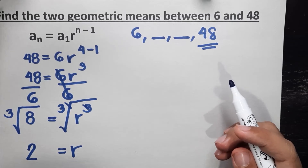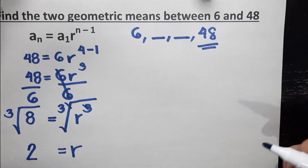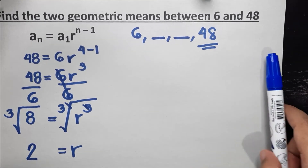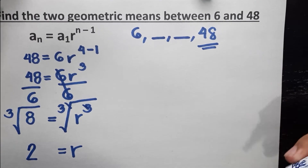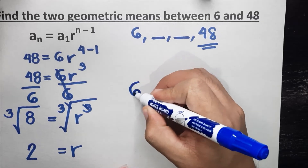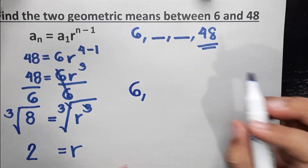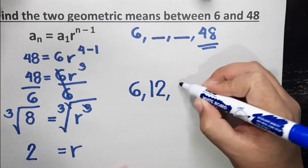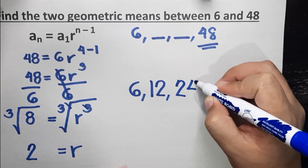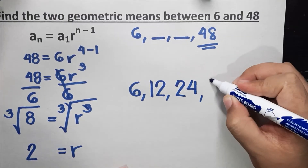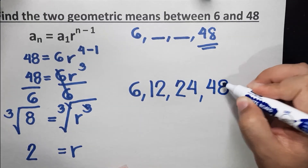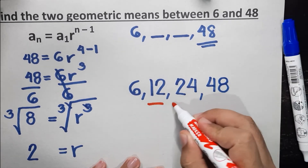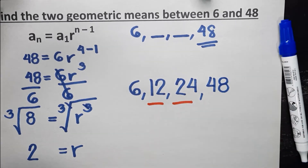Since we already know our common ratio, we can fill in the missing terms to complete our sequence. 6 times 2 gives us 12, times 2 gives us 24, times 2 gives us 48. So 12 and 24 are our two missing geometric means.